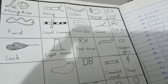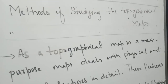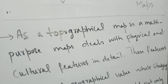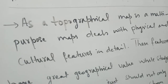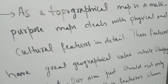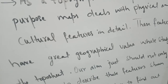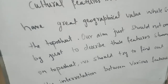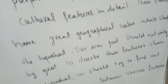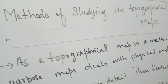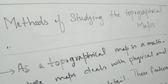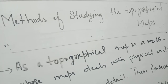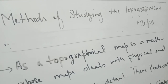Methods of studying the topographical map: there is no specific method mentioned, but these are multi-purpose maps which deal with physical and cultural features, and all these features have great geographical value. Whenever there is a need to study those features in a topo sheet, our aim is not only to describe those features but to find out the relation and correlation between and among all those features. That should be our main purpose. This is how we can read and better understand the topographical map — the purpose can only be understood if we create a relationship among all the features shown on the topo sheet.